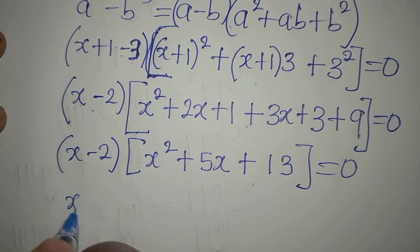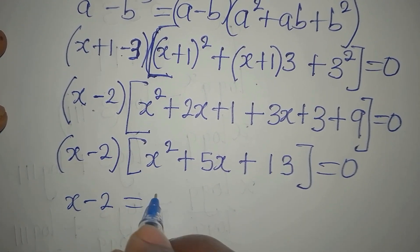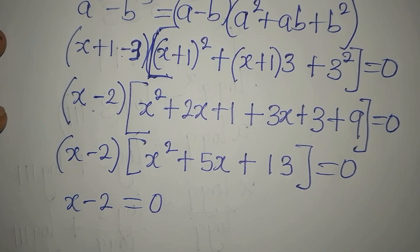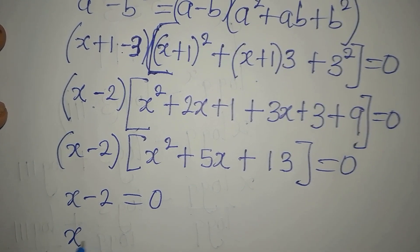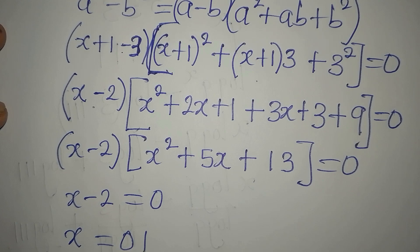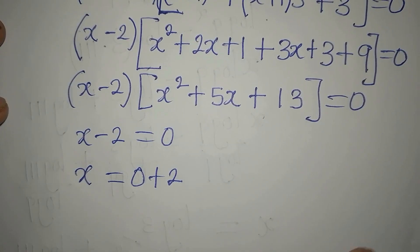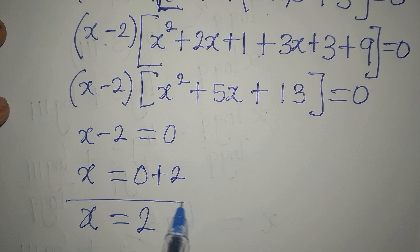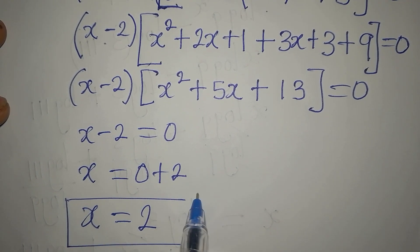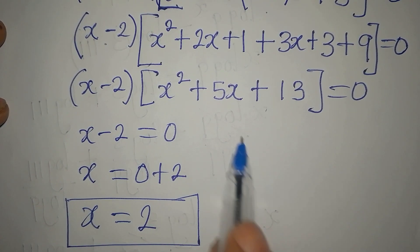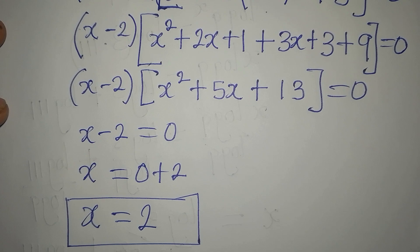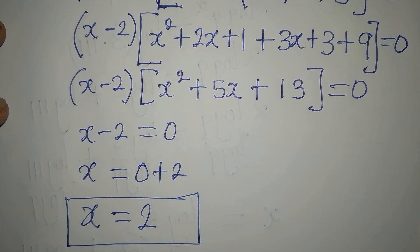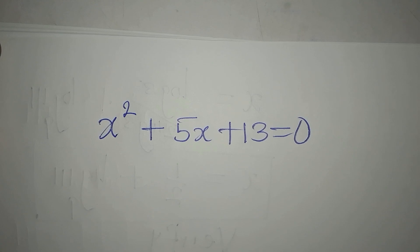It is either x - 2 = 0 or x² + 5x + 13 = 0. From the first factor, x = 2. This is one of our solutions.